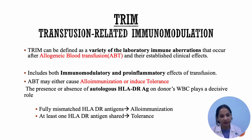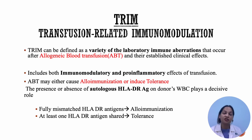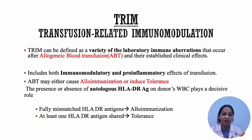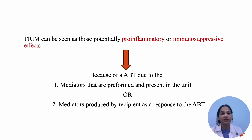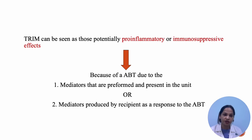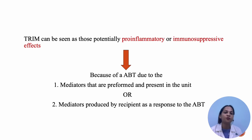TRIM includes both immunomodulatory effects and pro-inflammatory effects. Allogeneic blood transfusion can cause either alloimmunization or tolerance, and it is dependent on the presence or absence of autologous HLA-DR antigen on donor WBC. If there is a fully mismatched HLA-DR antigen, that can lead to alloimmunization; if there is at least one HLA-DR antigen sharing, then that can lead to tolerance. TRIM can be seen as potentially pro-inflammatory or immunosuppressive, because of mediators already preformed in the blood component or produced by the recipient in response to the transfusion.